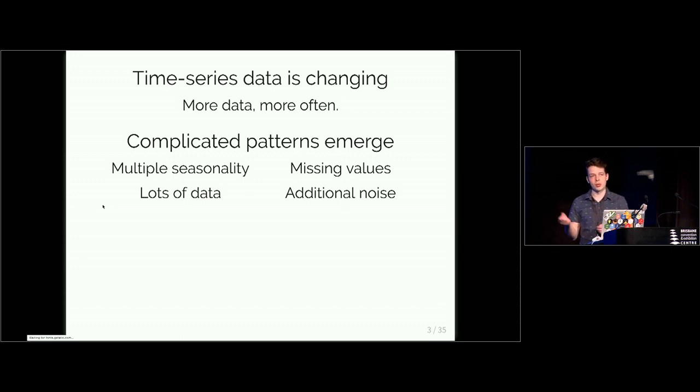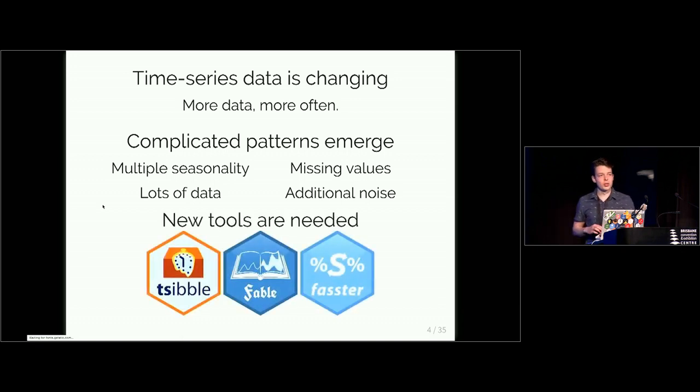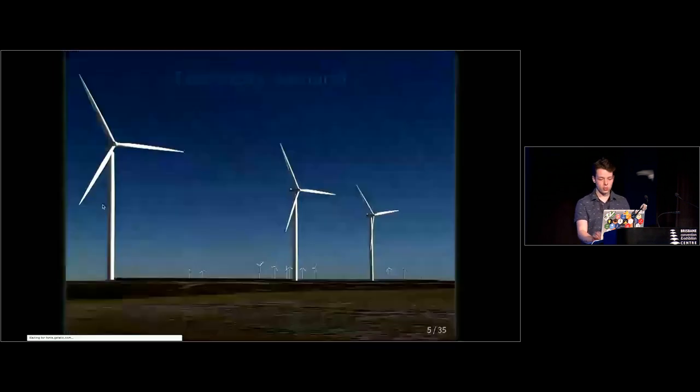If you try to observe something regularly stuff goes wrong, stuff gets weird and as you observe things more regularly over the same period of time you're going to have substantially more data. It adds up really quickly. So we need some new tools to capture this new pattern and hopefully the tidyverts have got you covered with Sybil from Eero, Fable from Rob and I and FASTA for forecasting.